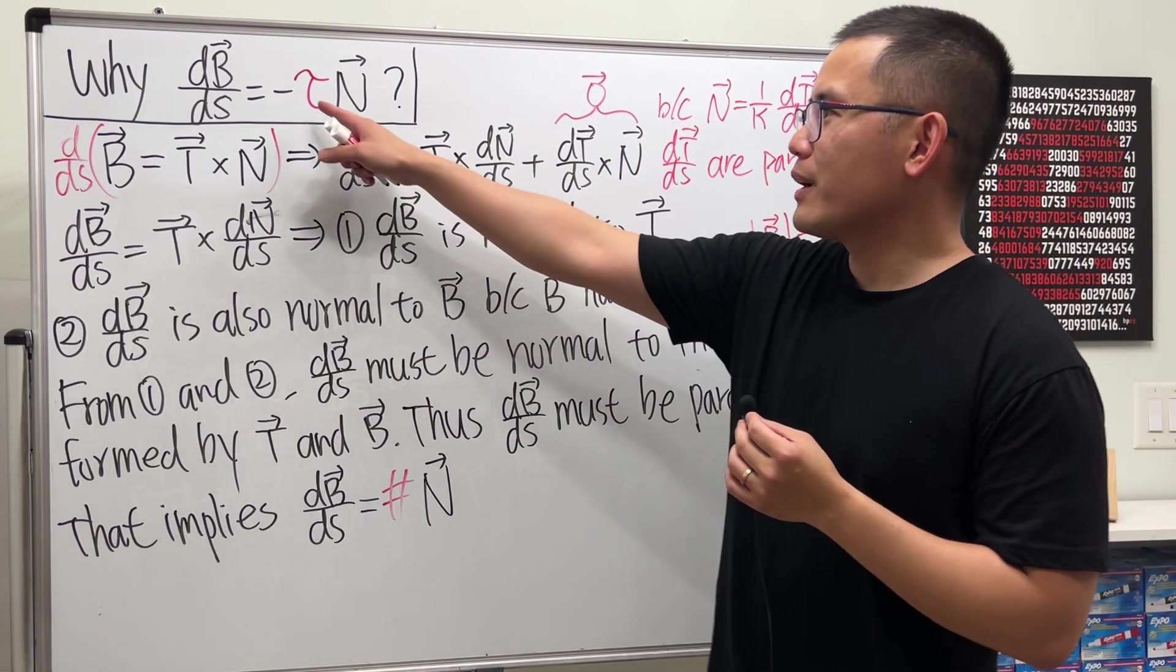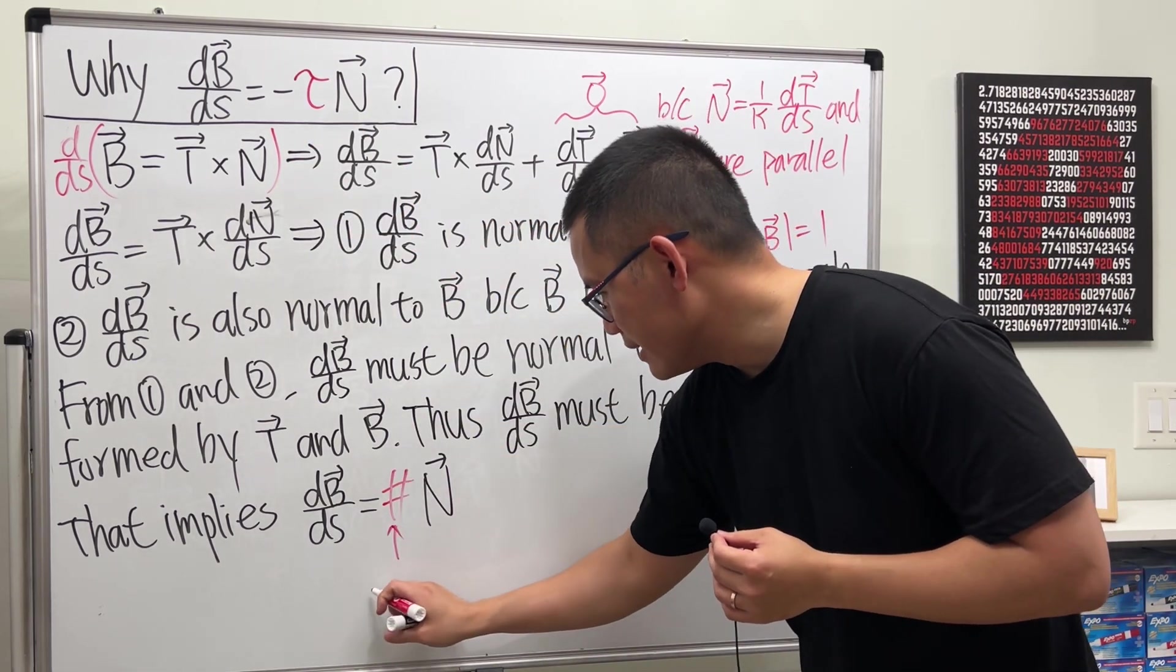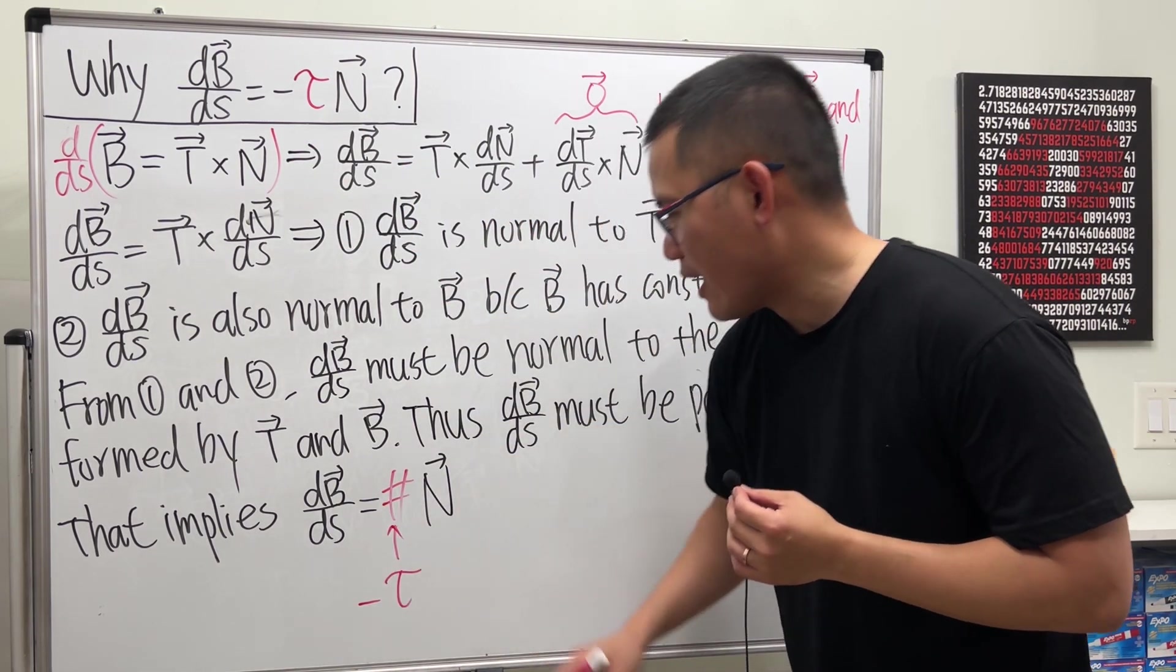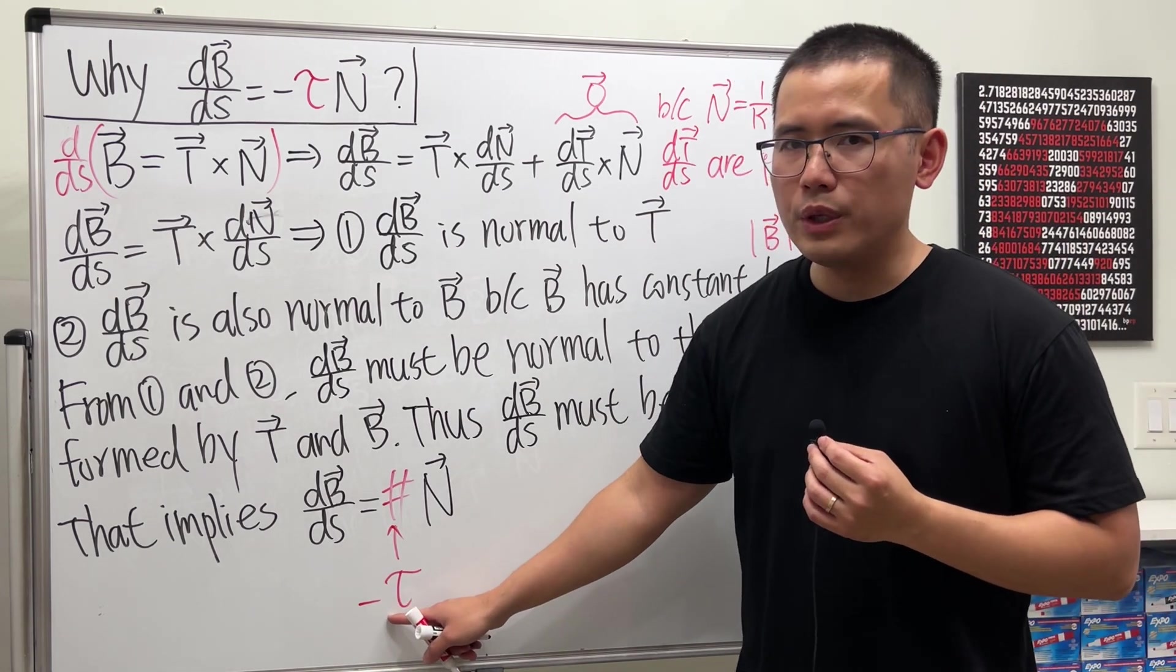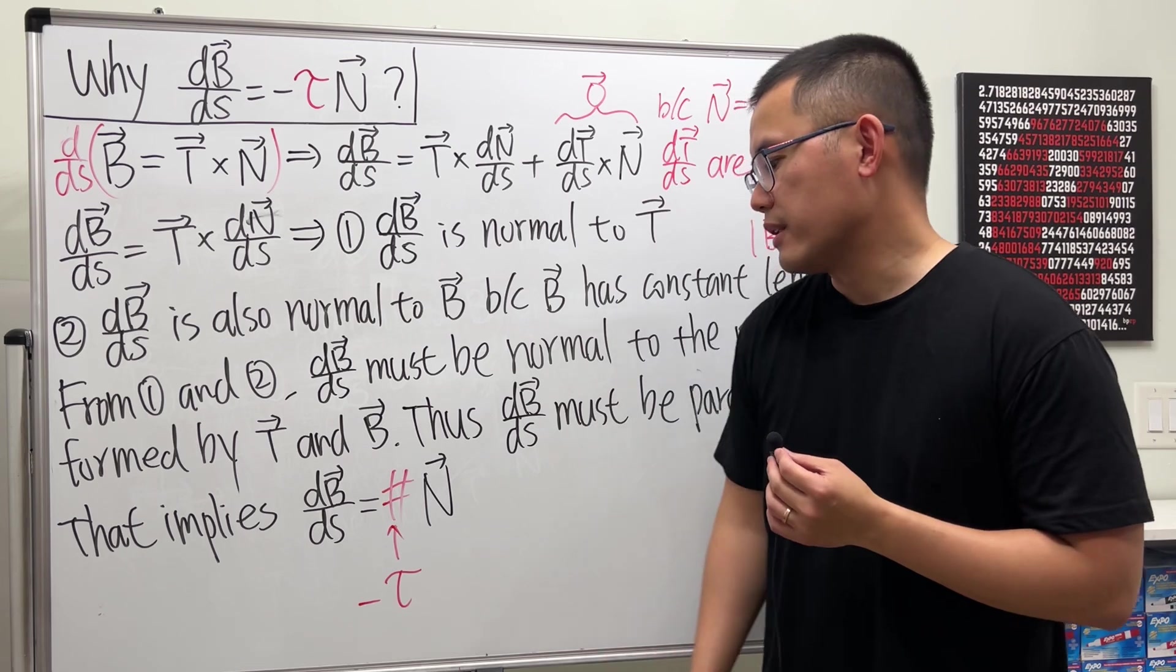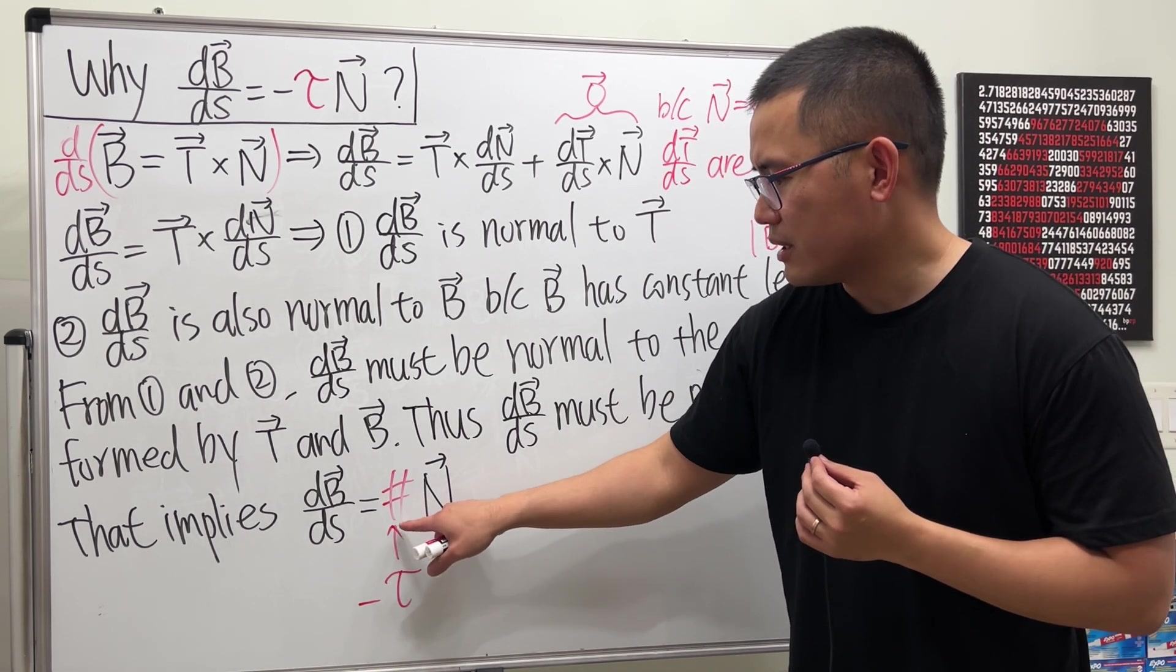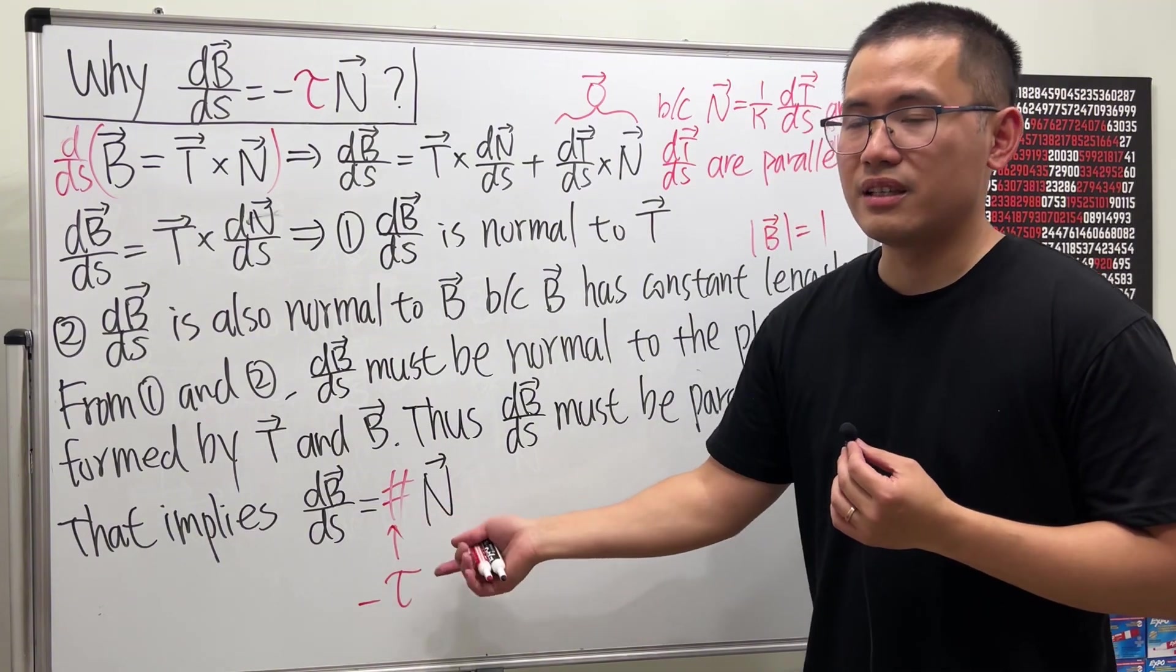And how are we going to write this constant? Well, you guessed it. We are going to write it as negative tau. This right here is precisely our negative tau. And you might be wondering why we need a negative. Well, I will tell you this right here is just because of the tradition. That's why they use a negative tau. But imagine that this right here is just being a constant. That's all.